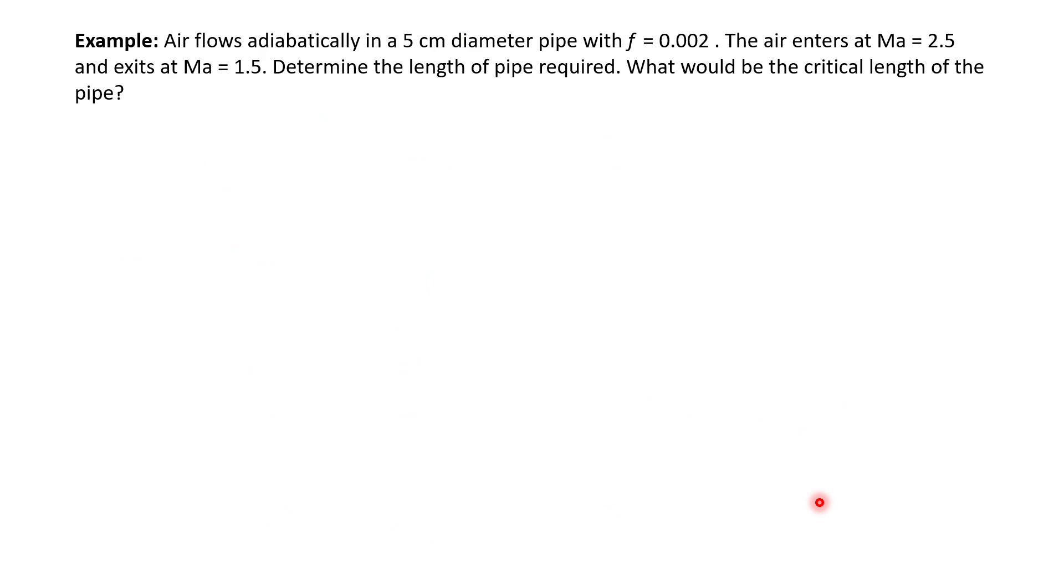Let's go see the example. Air flows adiabatically in a 5 cm diameter pipe with friction coefficient of 0.002. The air enters at Mach number of 2.5 and exits at Mach number of 1.5. Determine the length of the pipe required. What would be the critical length of the pipe?